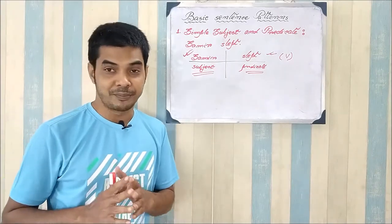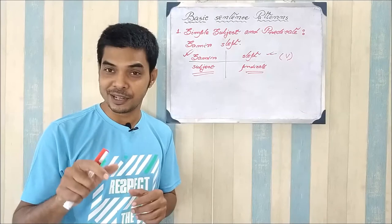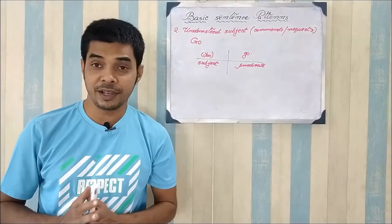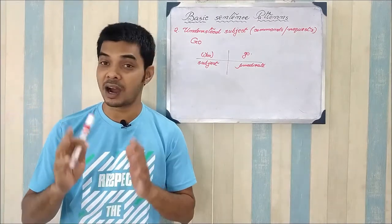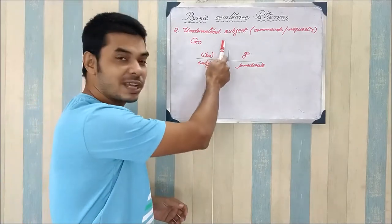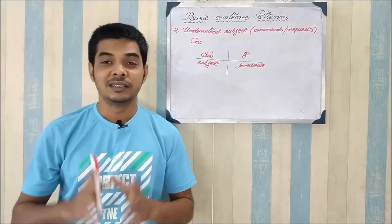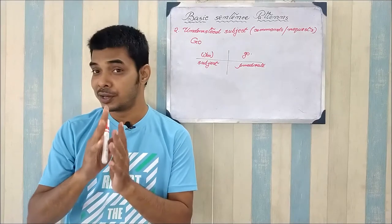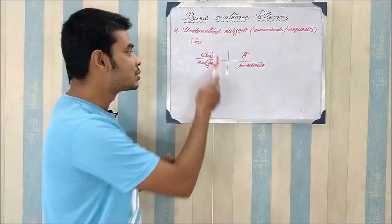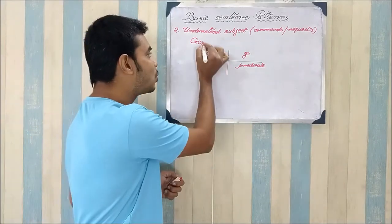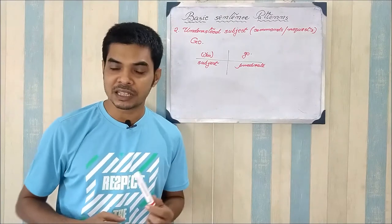What would be the second type of pattern or sentence? We'll check here in this video. So here we are with the second one: the understood subject. Sometimes for commands or requests, we keep the subject understood. Most of the time we consider that a sentence like 'go' is made of a verb only. But it's not a predicate only — it has a subject, but the subject remains understood. So 'go' is a sentence. When you say 'leave,' that's a sentence. When you say 'come,' that's a sentence.